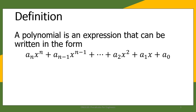a sub n times x raised to n, plus a sub n minus 1 times x raised to n minus 1, continuing until we reach a sub 2 times x squared, plus a sub 1 times x, plus a sub 0. As you can see, a polynomial is a combination of terms. Each of these is called a term, and terms are separated by either a plus or minus sign. Each term consists of constants, variables, and exponents.